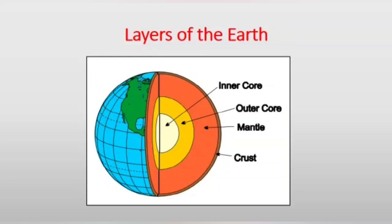The second layer is the mantle. Below the crust, there is the layer called mantle, and almost 80% of the Earth is formed by this mantle. The third one is the core. Core is the innermost layer of the Earth, but it is divided into two parts: inner core and outer core. The inner core is hard like a ball and it is made up of iron and nickel. Whereas the outer core is extremely hot — you can see in the diagram it is yellow in color — and is made up of metal. So, outermost is the crust, middle one is the mantle, and innermost is the core.